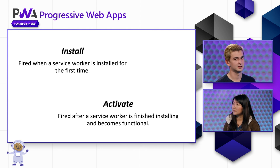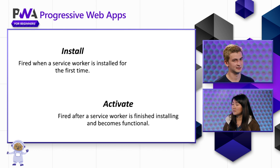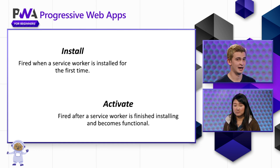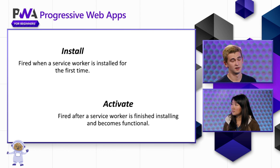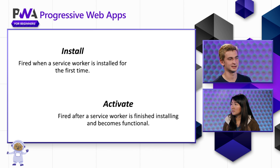The install event is fired when a service worker is first installed. This is a great place to add a handler that does any setup the service worker may need, and this often includes what we call pre-caching, which we'll cover in the next video. The activate event is fired after our service worker is finished installing and becomes fully functional. One of the key things we often do in the activate handler is something called claiming clients — this is basically when a service worker claims and takes responsibility for any existing instances of our application.